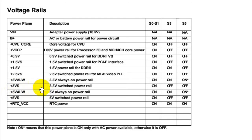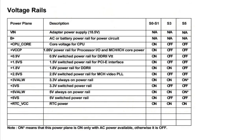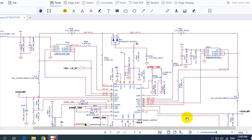We also have plus 3Vs — a switched power rail, on only in states S0 and S1. Similarly, plus 5Vs is the same. Then we have RTC — real time clock — VCC equal to 3.3V, present in all states because it is supplied by the CMOS battery.